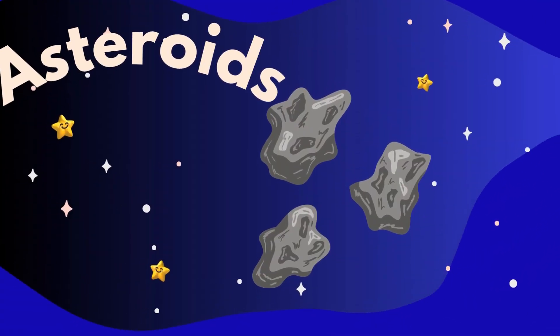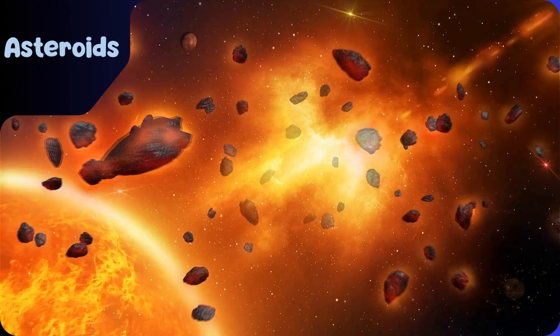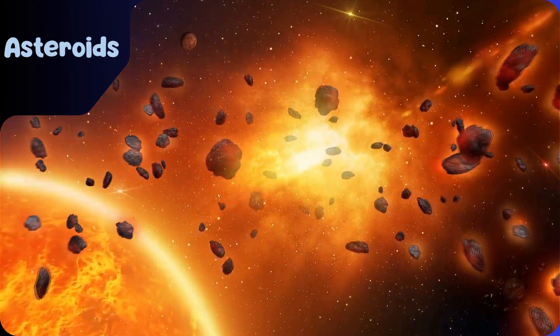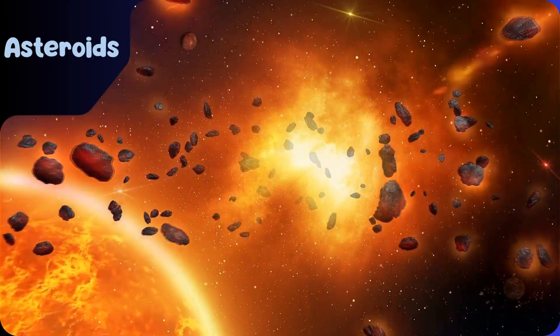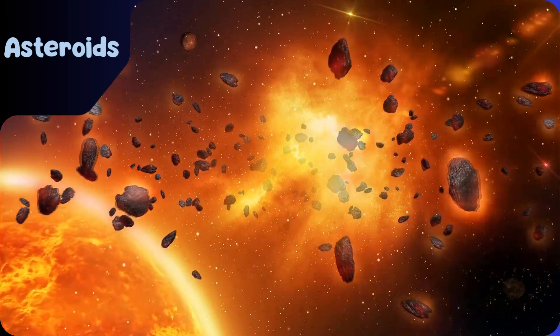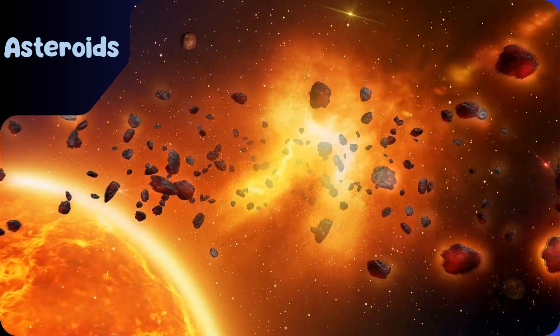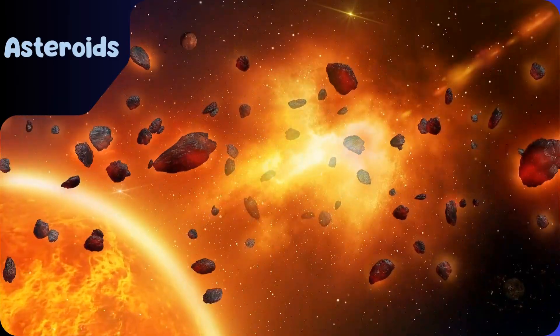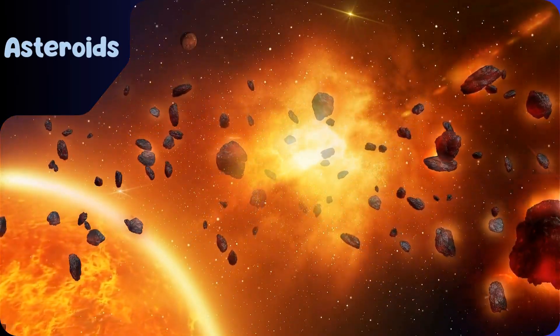See there. Big rocks floating in space. Asteroids. These are asteroids. They are made up of rock and metal and can be small or huge. Some asteroids live in the asteroid belt between Mars and Jupiter.